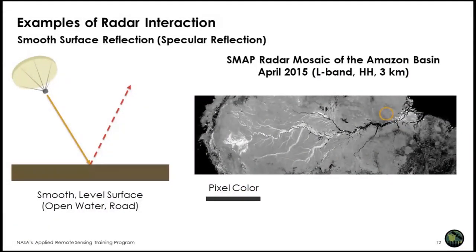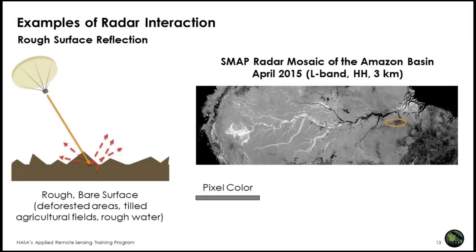An example shows a PALSAR L-band image at HH polarization over a tropical site. The brightest returns, especially along the river, are from inundated vegetation. Light gray areas are forests, and dark areas are either water or deforested areas with different levels of regrowth. Another example shows rough surface scattering on a SMAP radar image over an area of very low to no vegetation — deforested areas, agricultural fields with low vegetation, tilled fields, savannas, or bare fields. Rough water due to windy conditions can also cause rough surface scattering, meaning water will not appear completely dark.